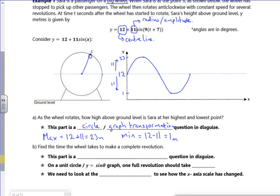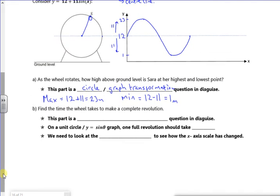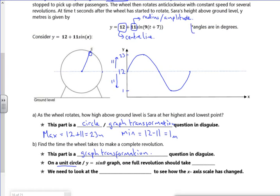So to find the time now. So this way is where it gets a little bit more tricky. So to find the time the wheel takes to make a complete revolution. So once again this is a graph transformation issue. So it says the unit circle should take, now it's 360 degrees because it says we're in degrees up here.